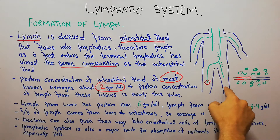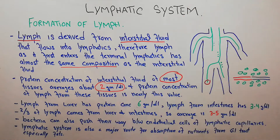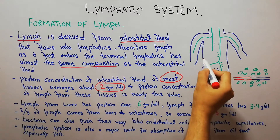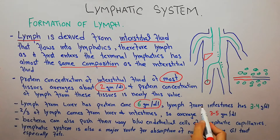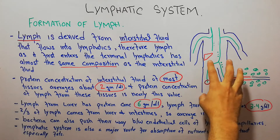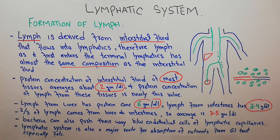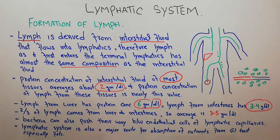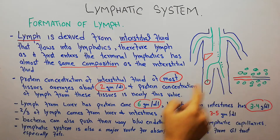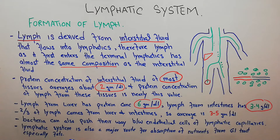Lymph derived from the leg, arm, neck, or head will have a protein concentration of around 2 grams per deciliter. However, lymph from the liver has a protein concentration of 6 grams per deciliter, and lymph from the intestine has 3 to 4 grams per deciliter protein concentration.